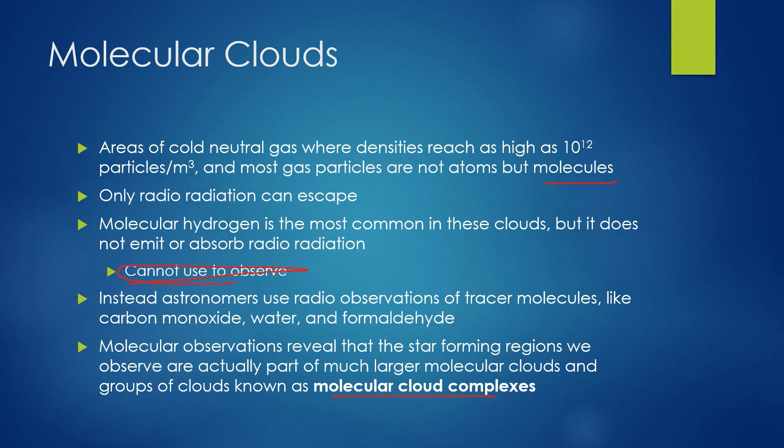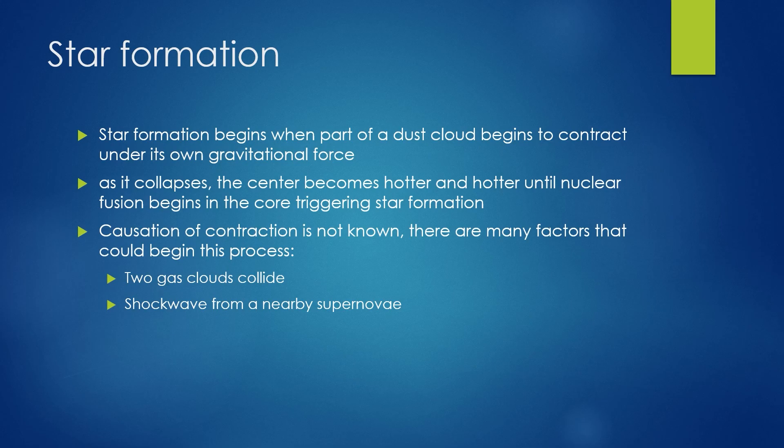Star formation is very important. Star formation begins when part of a dust cloud begins to contract under its own gravitational force. As it collapses, the center becomes hotter and hotter until nuclear fusion begins at the core, triggering star formation. The causation of contraction is not actually well known — there are many factors that could begin this process such as two gas clouds colliding or a shock wave from a supernova. There are a lot of things that could potentially cause a chain reaction to begin.